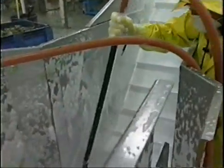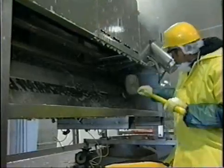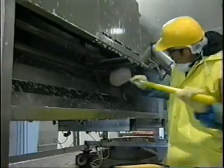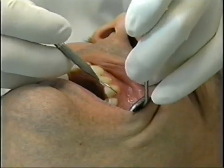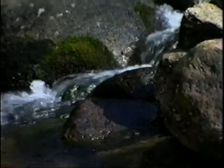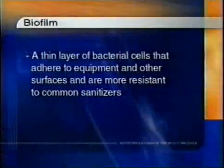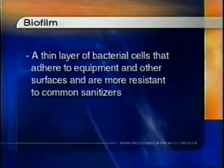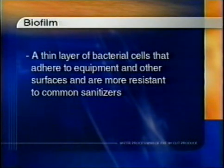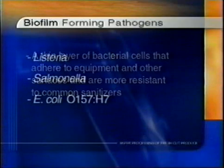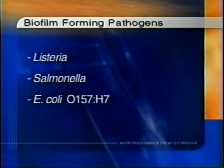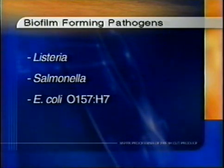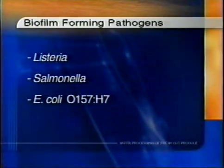What is the importance of acceptable equipment construction and proper cleaning and sanitizing activities? Acceptable equipment construction and proper cleaning and sanitizing activities play a key role in the control of biofilm. Have you heard your dentist talk about removing plaque from your teeth? Have you ever walked across a stream and slipped on slimy rocks? These are both common examples of biofilms. Biofilm can be defined as a thin layer of bacterial cells that adhere to equipment and other surfaces and are more resistant to common sanitizers. Various pathogens such as Listeria, Salmonella, and E. coli O157:H7 have been shown to form biofilms that can contaminate food products during production.